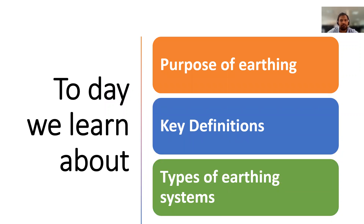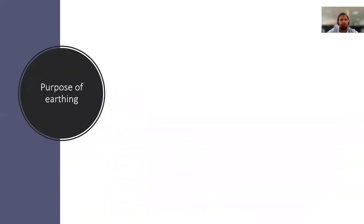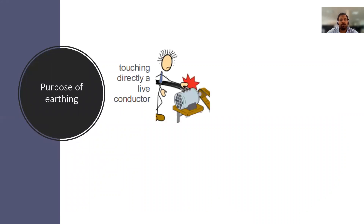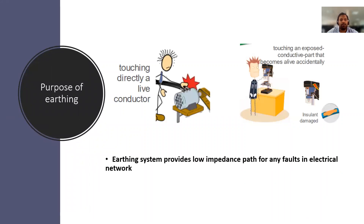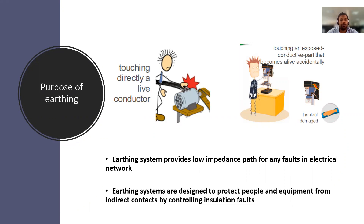Why do we need earthing? Earthing systems provide a low impedance path for any fault in an electrical network. Earthing systems are designed to protect people and equipment from indirect contacts by controlling insulation faults.